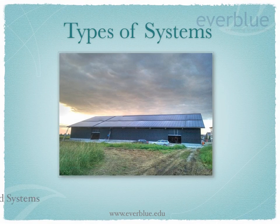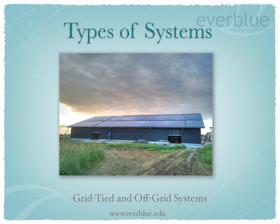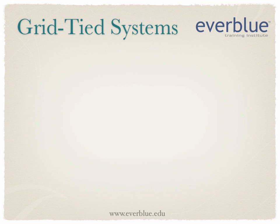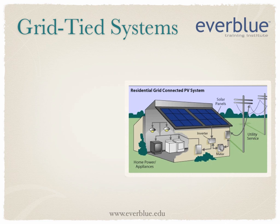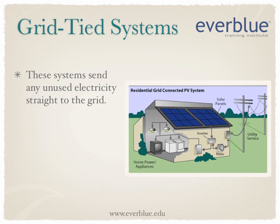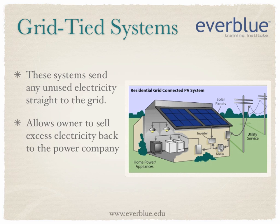The two major types of photovoltaic systems are set up as grid-tied or off-grid. Grid-tied systems are the most common. They send any unused electricity directly to the grid. This system acts as a mini power plant, allowing the owner to sell energy back to the power company.